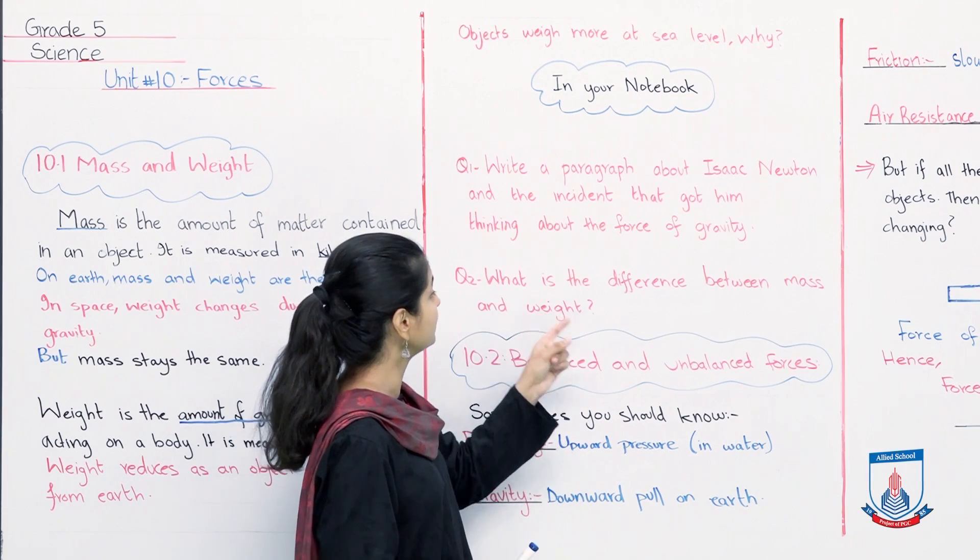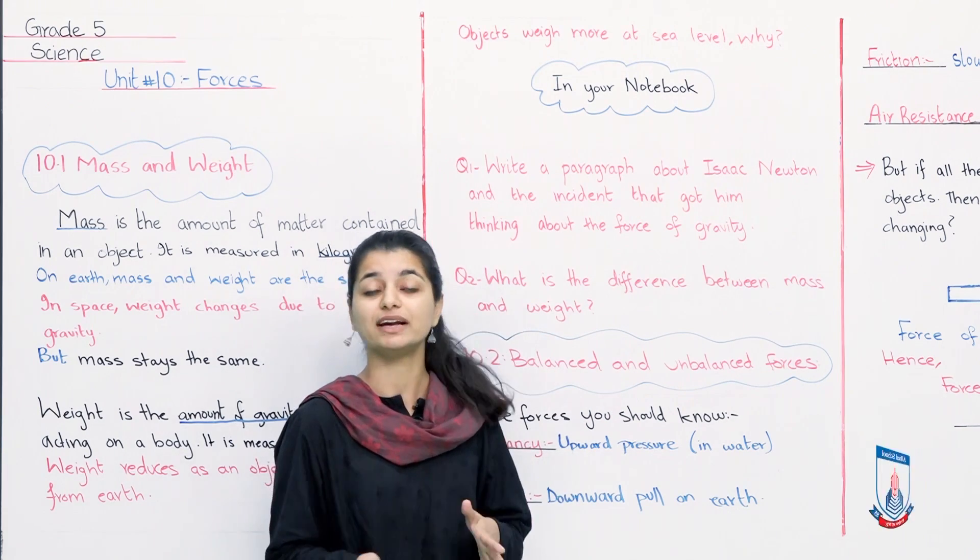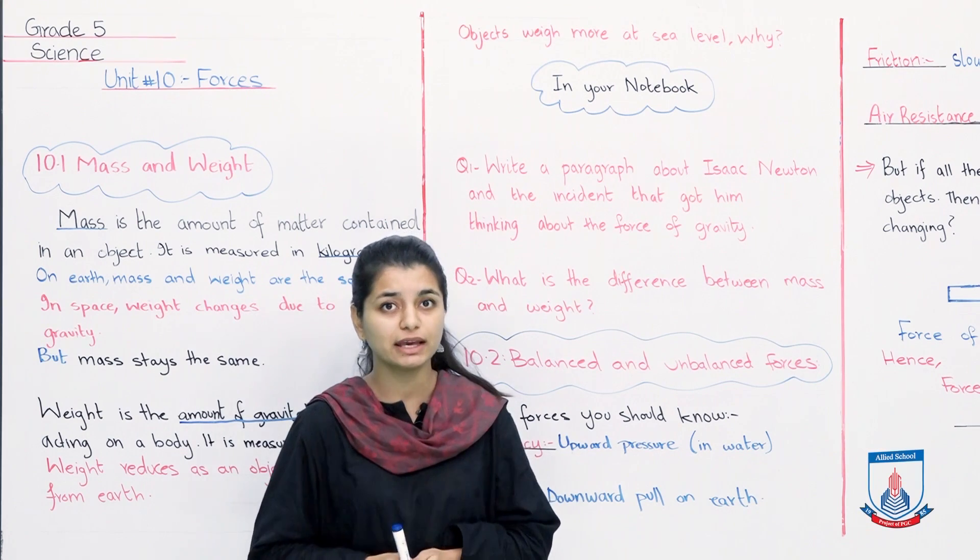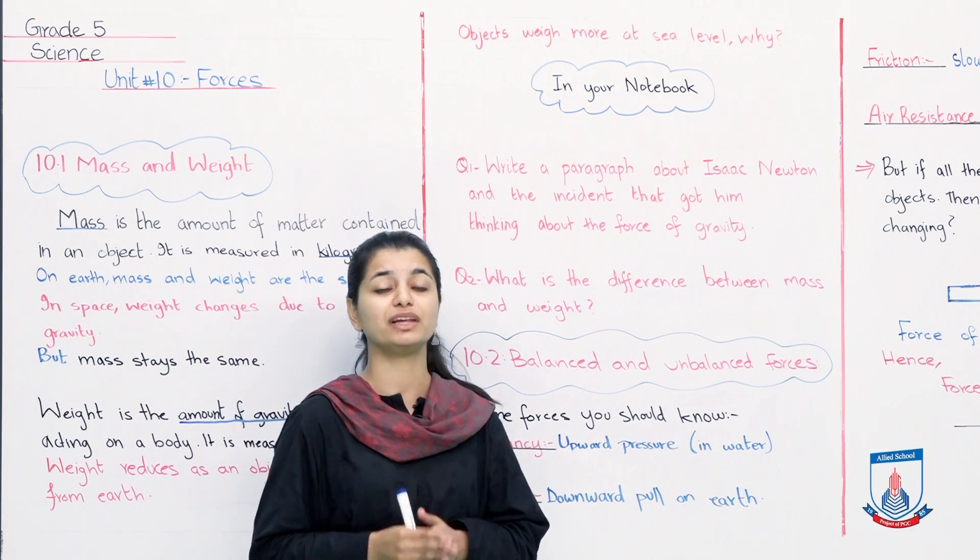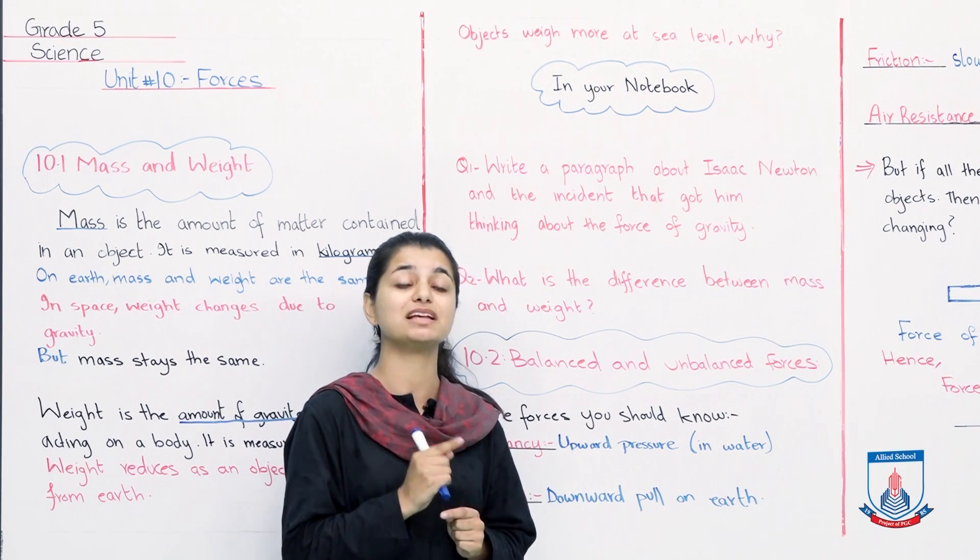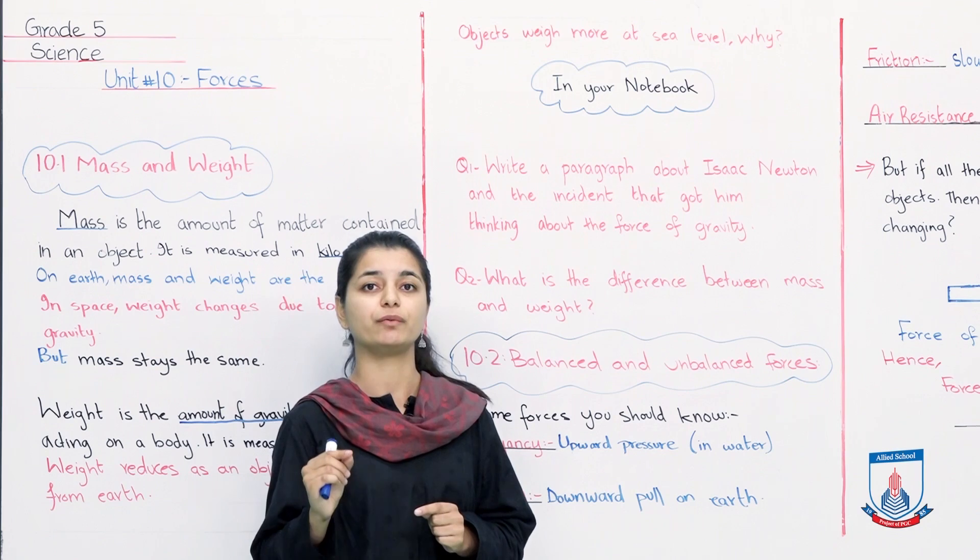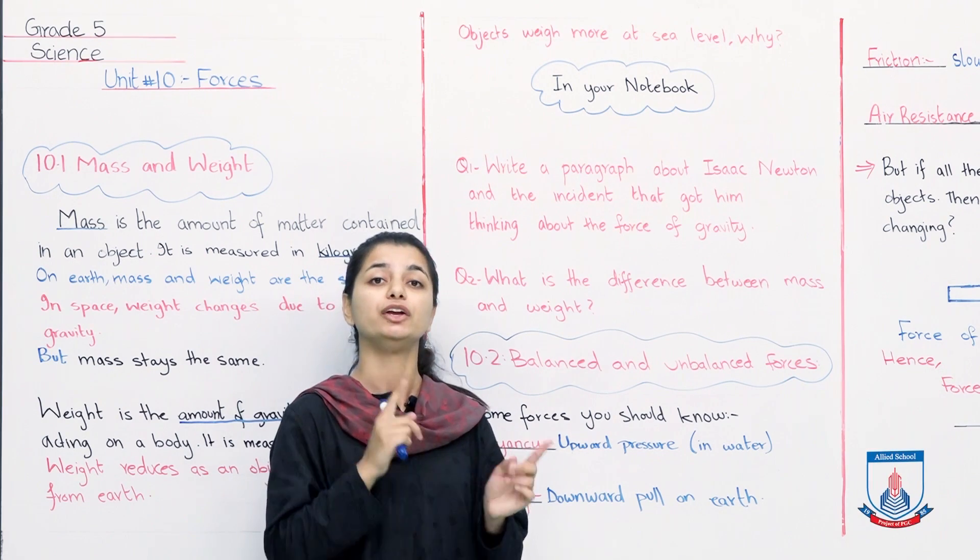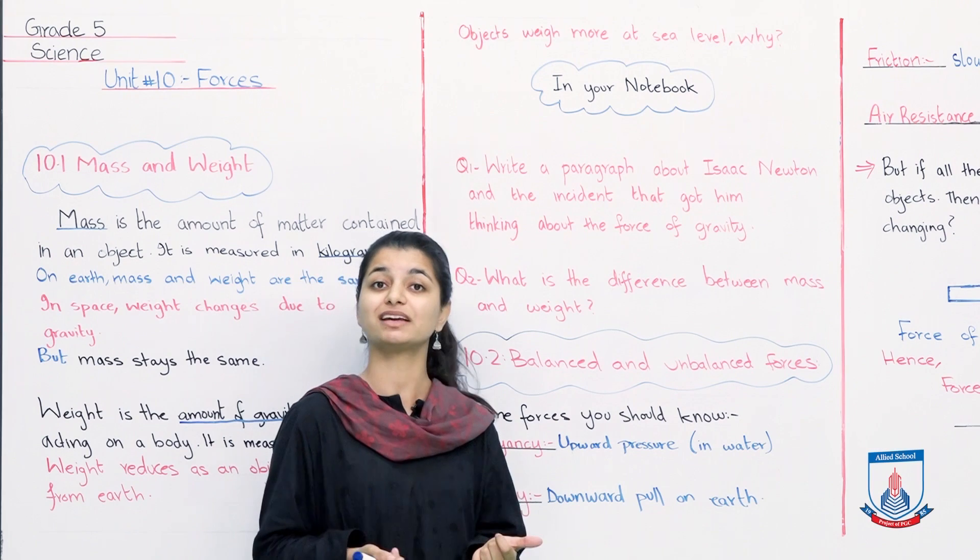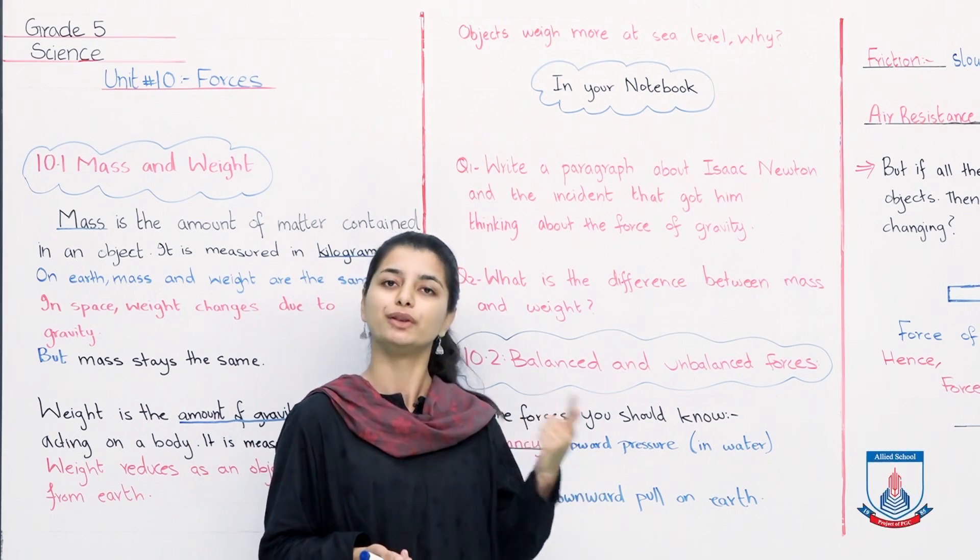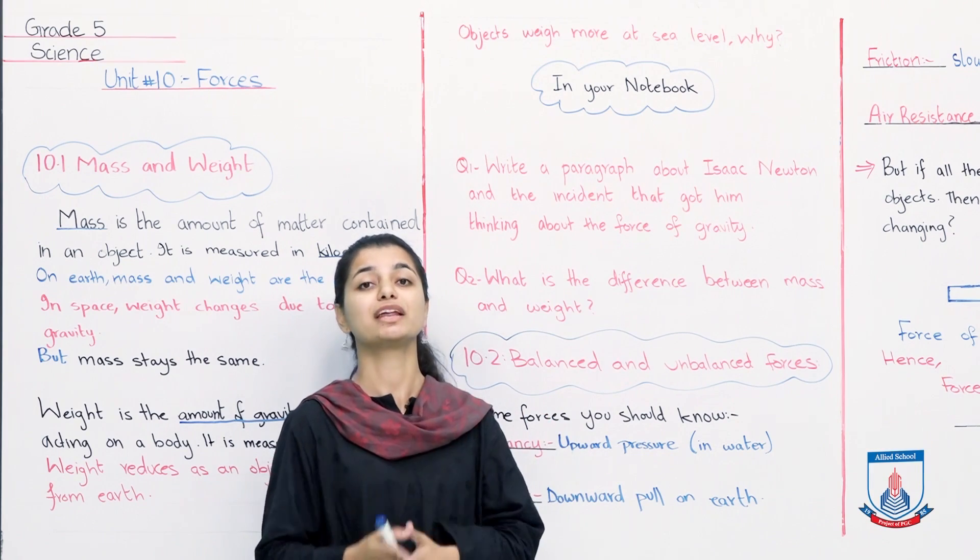So you can write about this incident in your notebook, and explain that Isaac Newton through this incident discovered that what gravity is, and he started learning more about it. And because of that, today we know that weight is an entire concept of gravitational force. A thing has as much weight as there is gravitational force on it, because of that, things are pulled downward. Let's read ahead, what is the difference between mass and weight? Very simple, we have already discussed this.